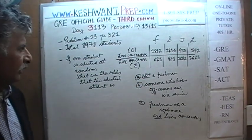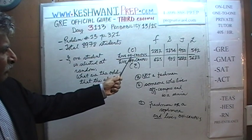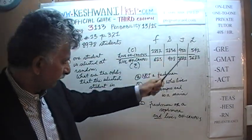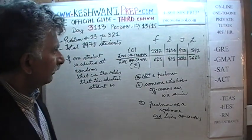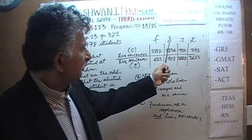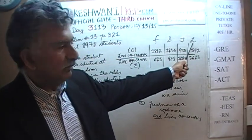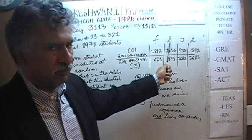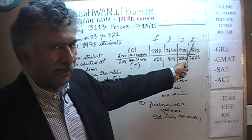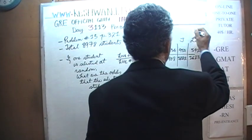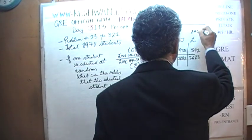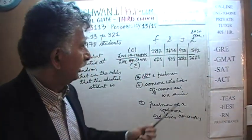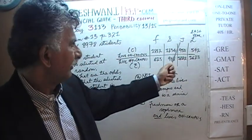And this is the data set. People who live on campus, people who live off campus, and the four years: freshmen, sophomores, juniors, and seniors. I did not put the S for seniors because that S would confuse us with sophomores. So I put down L for the last year, which is the seniors — the students who are in their last year.